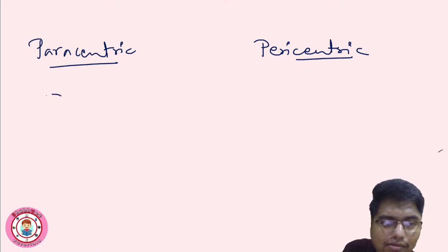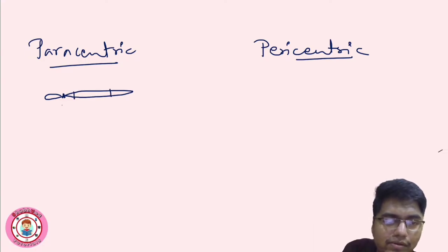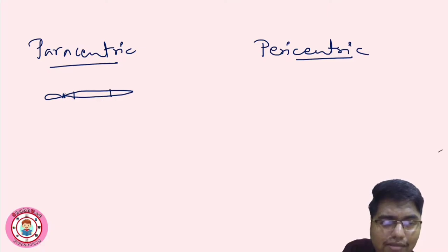Here is a chromosome with its centromere. If the inversion occurs in a segment where the centromere is not involved, this is known as paracentric inversion.